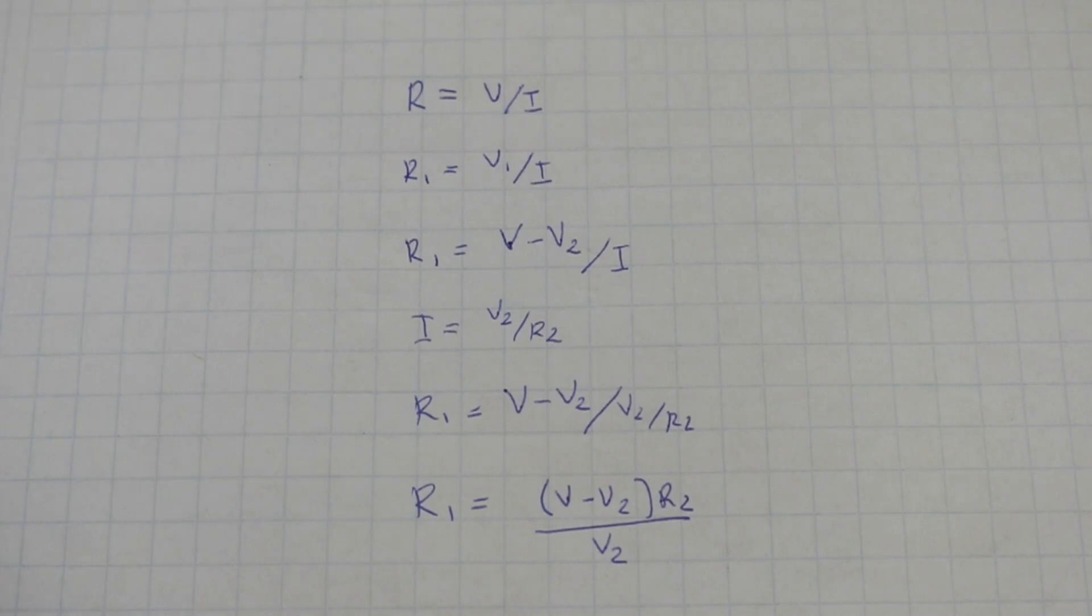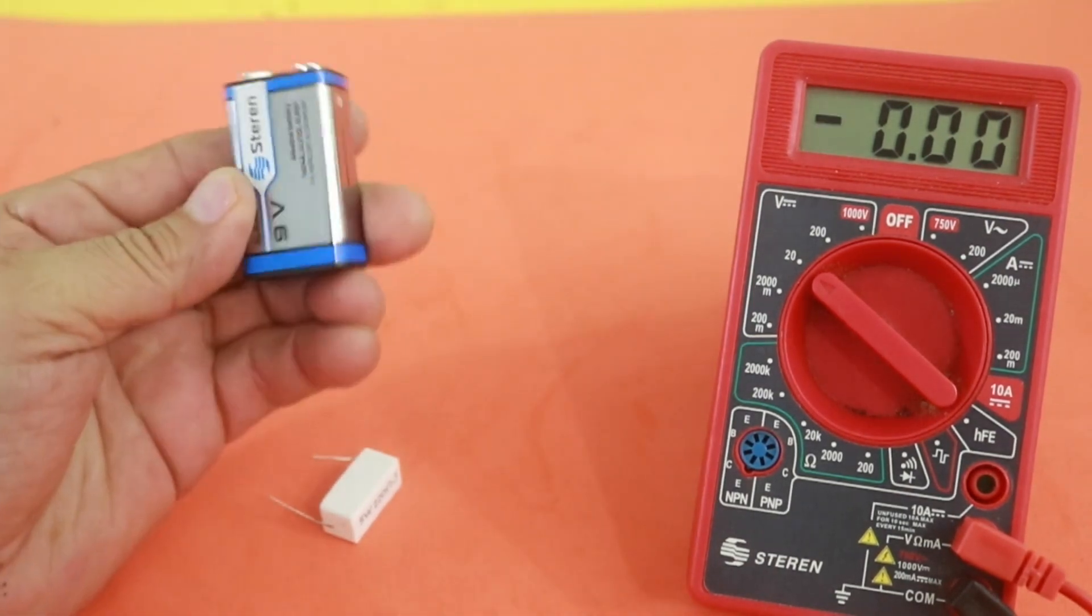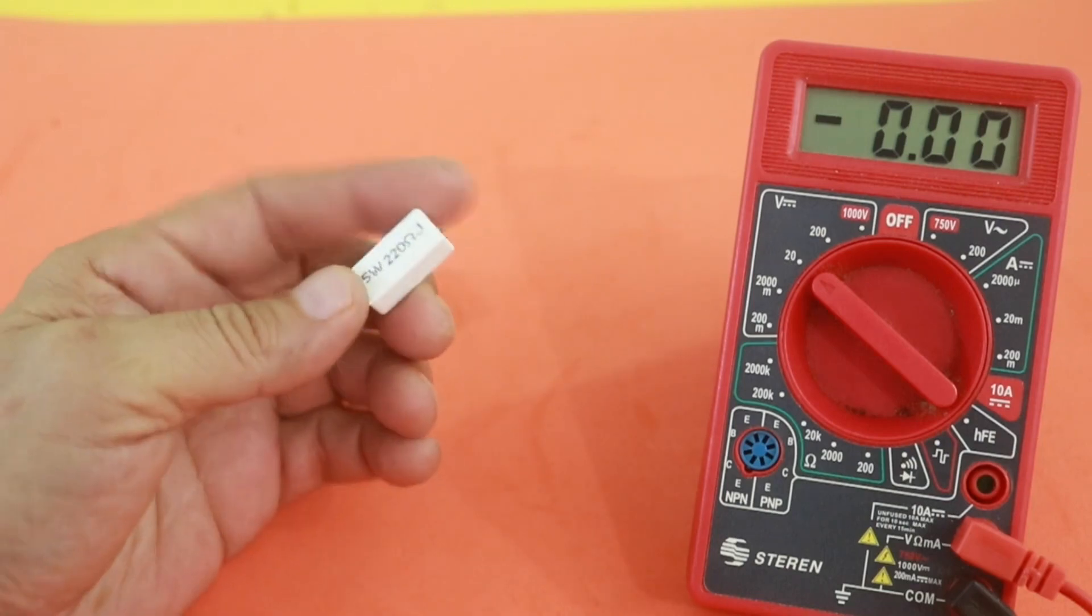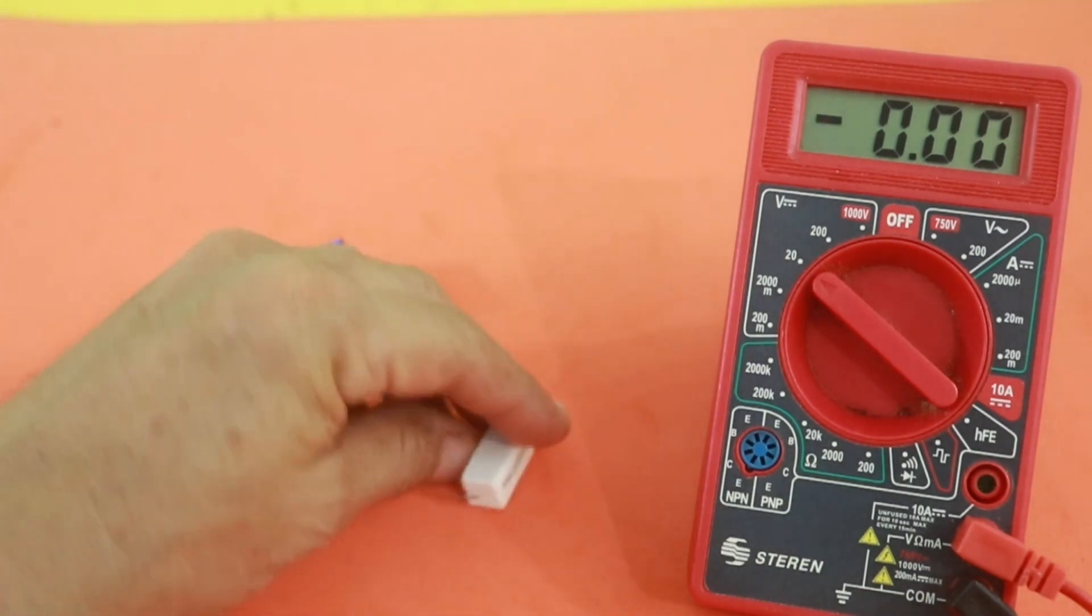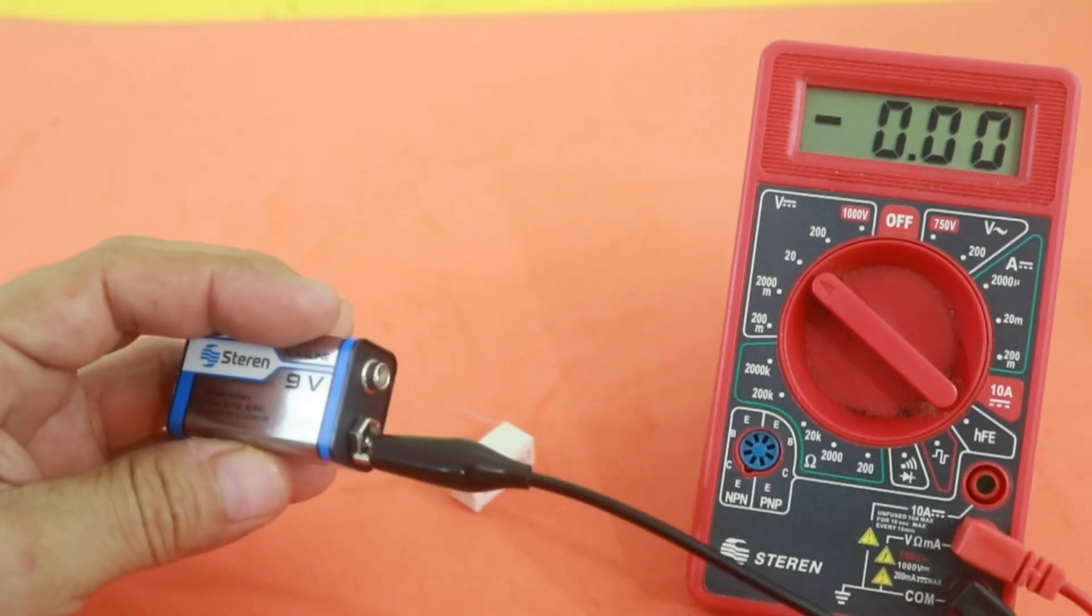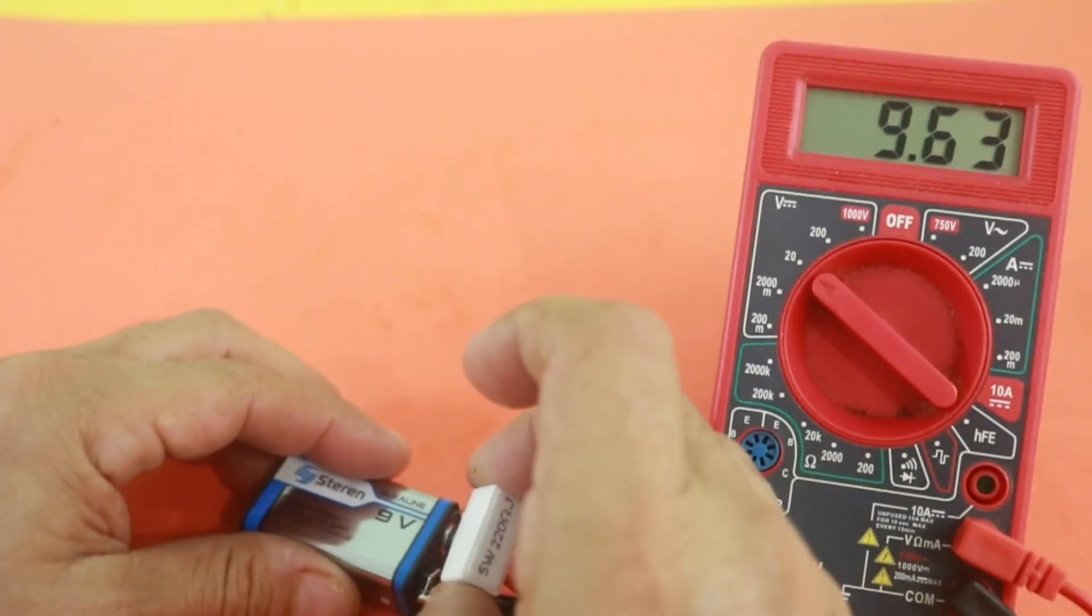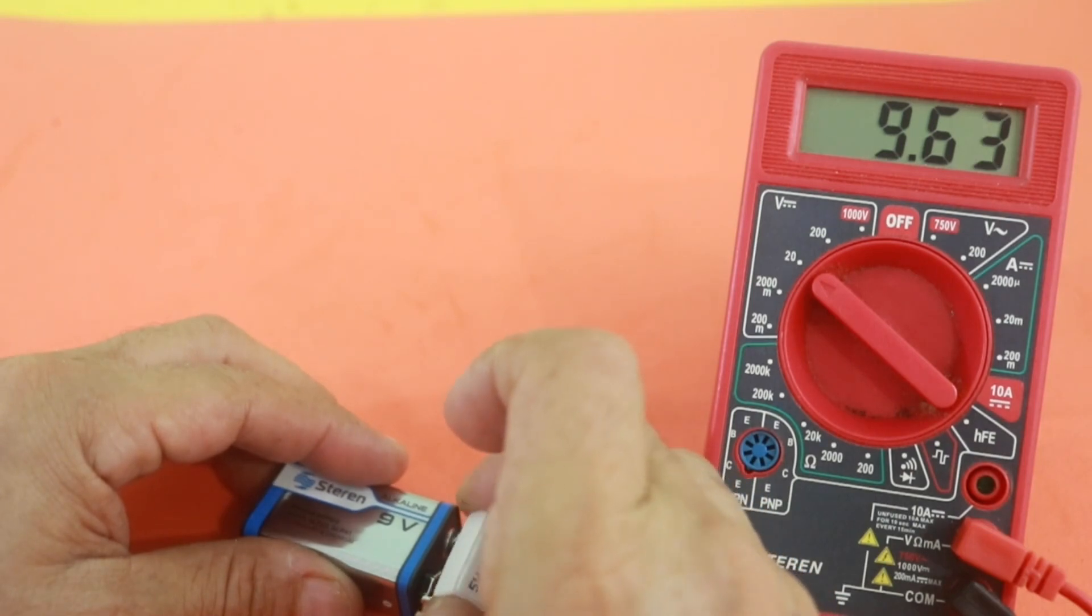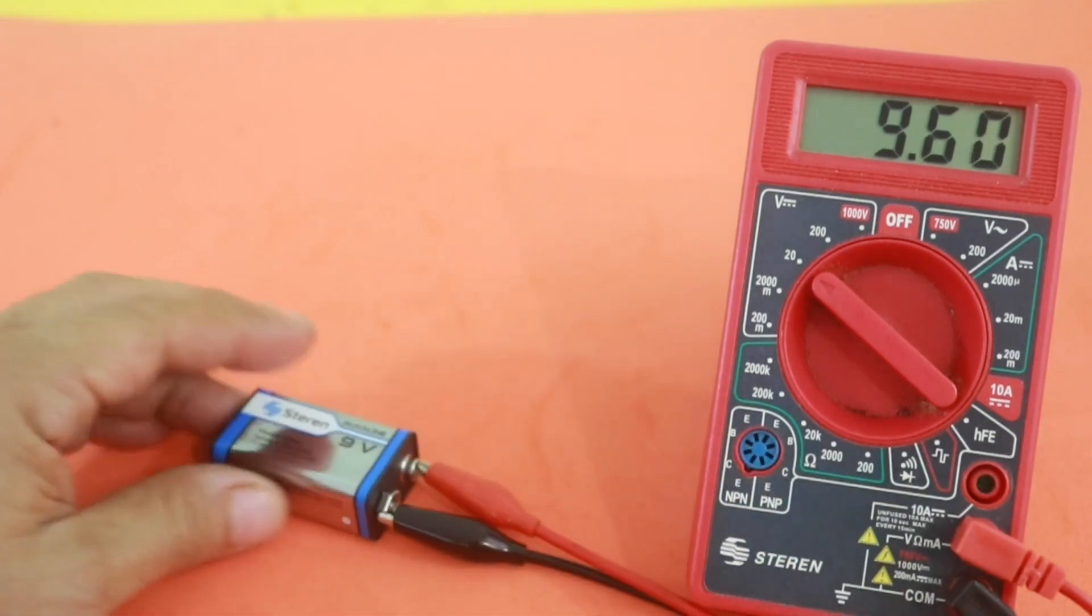So, let's see an example. Let's try with this alkaline 9 volt battery. And I will use a resistor of 220 ohms. This will be R2, the external load. So, let's measure first the voltage V, the open circuit voltage of the battery. And we get a value of 9.64 volts. And now, connecting the resistor, the voltage V2, is 9.50 volts. That's all that we need.